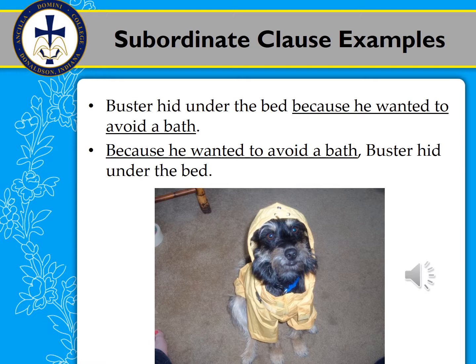What sometimes happens is students will cut off the sentence — they'll say 'Buster hid under the bed' and stop, then write 'Because he wanted to avoid a bath' as a separate sentence. No — they're all one sentence. Keep the sentence going, because you're specifically describing the verb in the previous clause and you don't want to cut that off. Likewise, the second example places the subordinate clause first: 'Because he wanted to avoid a bath, Buster hid under the bed.' Note the comma after the subordinate clause when it comes first. The meaning is the same — it describes why Buster hid — just repositioned to the front of the sentence.